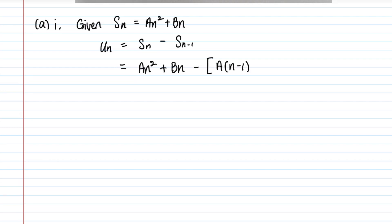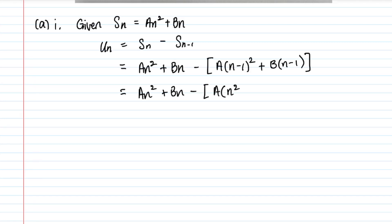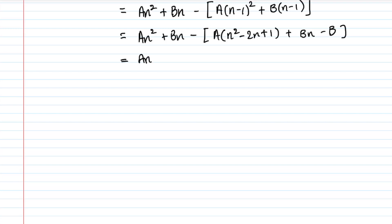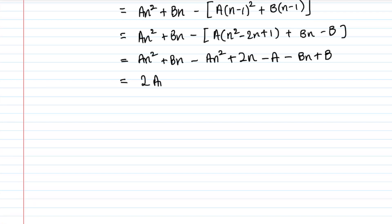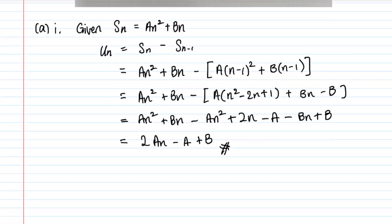So you get an² + bn − [a(n−1)² + b(n−1)]. Expanding: an² + bn − [an² − 2an + a + bn − b]. Collecting terms: an² + bn − an² + 2an − a − bn + b. The an² and bn terms cancel, leaving 2an − a + b. That is the answer for part a(i) — very simple once you apply the summation knowledge.